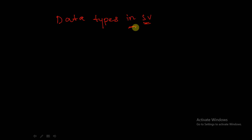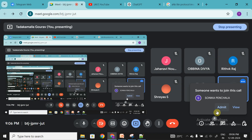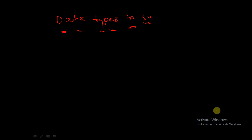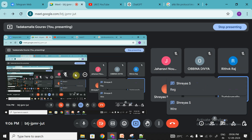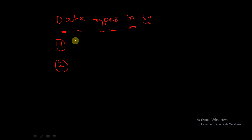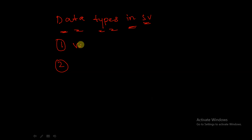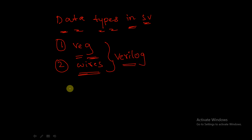In Verilog, what are all the data types which we have? The two main data types are registers and wires. These are the two main data types which are present in Verilog. Now, what are all the values these registers and wires can hold?